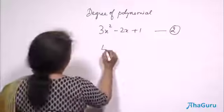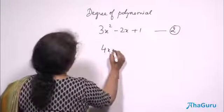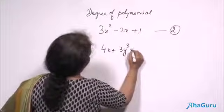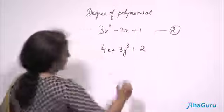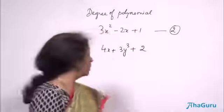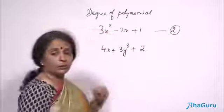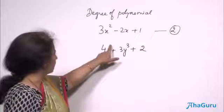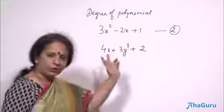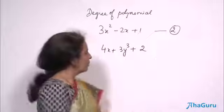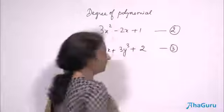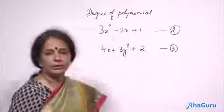Consider 4x plus 3y cube plus 2. What is the degree of this polynomial — what is the highest power? Here you have 1, but here you have 3. So between 1 and 3, 3 is the higher number. The highest power being 3, the degree becomes 3.